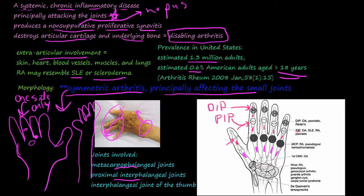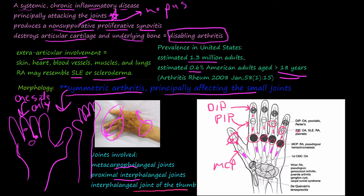Rheumatoid arthritis affects the metacarpal phalangeal joints — because these are the metacarpals and these are your phalanges — as well as the proximal interphalangeal joints and the interphalangeal joint of the thumb. So all of those MCP joints, PIP joints, and the thumb IP joint can be affected in rheumatoid arthritis. A helpful chart shows that the distal interphalangeal joints are associated with osteoarthritis, psoriatic arthritis, and reactive arthritis, while the PIP and MCP joints are associated with RA.